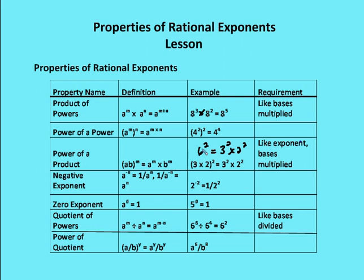So 6 squared becomes 3 squared times 2 squared. Now, negative exponent — this is the one that most students tend to forget. They see the negative value and think they should make the value negative, but that's not the case. All we're saying is the negative stands for taking the reciprocal of the value. So if I have a to the negative n, that's the same as 1 over a to the n.